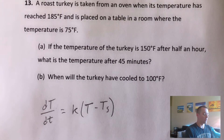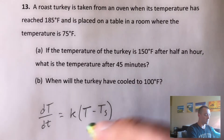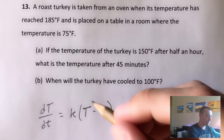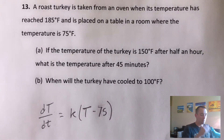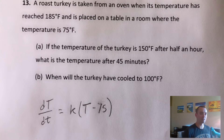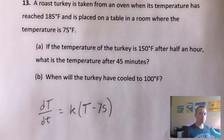Right off the bat we can go ahead and plug 75 in for TS and go from there. Basically what we want to do is use this Newton's law of cooling formula, along with the exponential growth and decay formula that is also in my integral calculus cheat sheet, and use those two things together to create a function which tells us the temperature of this turkey at time T.